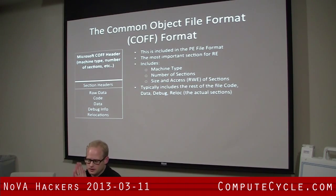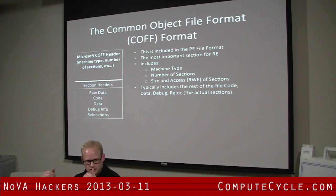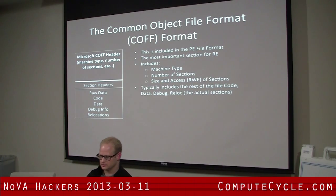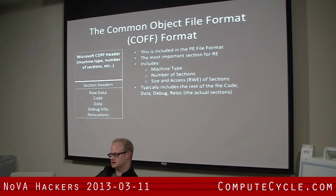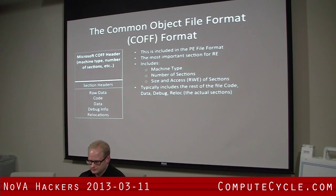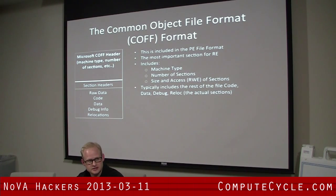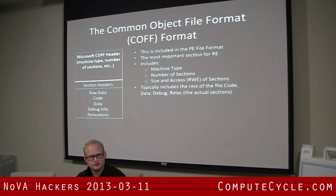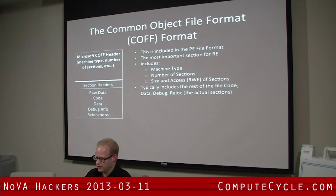Next is the common object file format, right after the PE header. This is the most important section — this is where all the reverse engineering information is. This is the data, text, and every single section has different access permissions that the computer is supposed to respect.